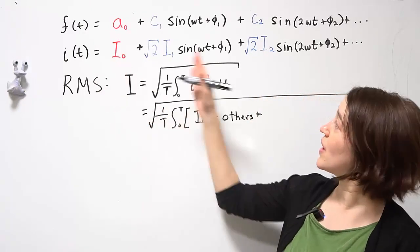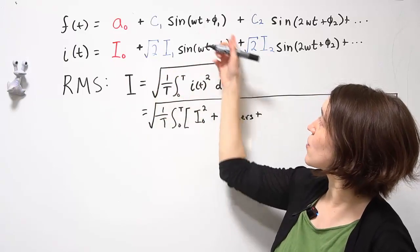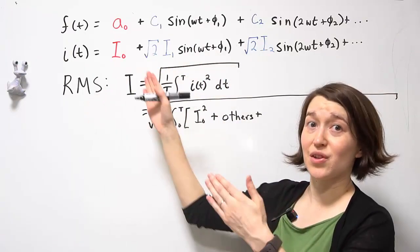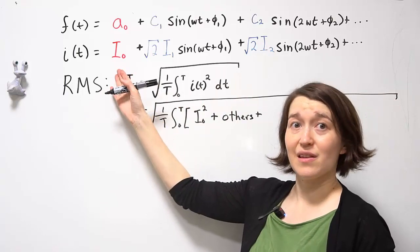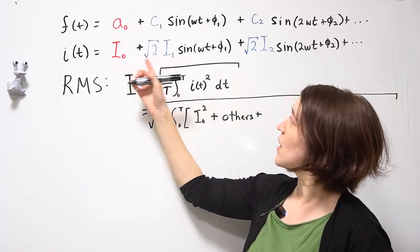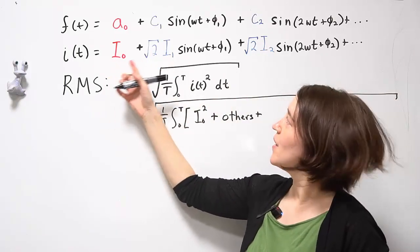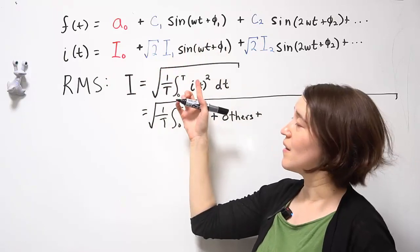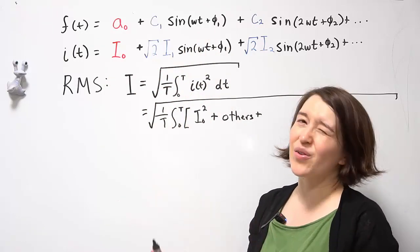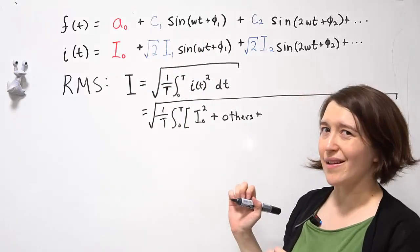Then we would go to the next term. So now we would take this term and we're going to multiply it by each of the terms in the expansion. So again, this times I0. You're going to get a sine and you're going to take the average of that. That's also going to be zero. So we'll count that as others.